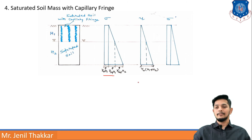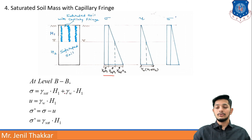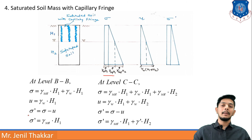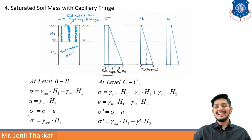At level BB: total stress = gamma_saturated × H1 + gamma_W × H1. Deducting U = gamma_W × H1 gives sigma' = gamma_saturated × H1. At level CC: sigma = gamma_saturated × H1 + gamma_W × H1 + gamma_saturated × H2. U = gamma_W × H1 + gamma_W × H2. Deducting U from total stress gives sigma' = gamma_saturated × H1 + gamma' × H2.